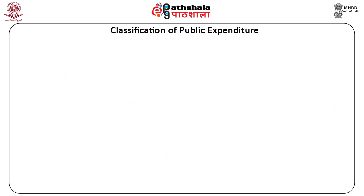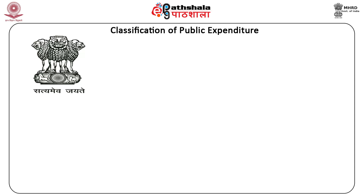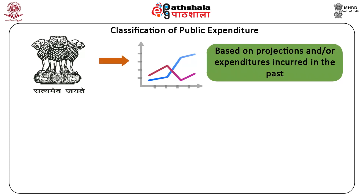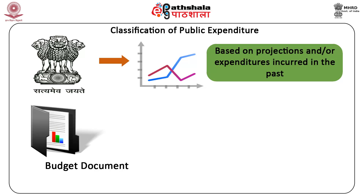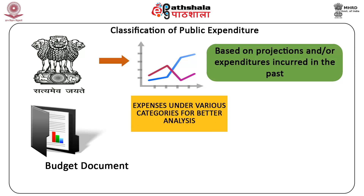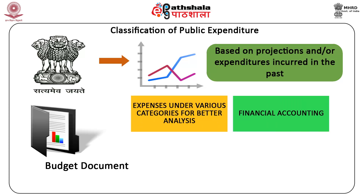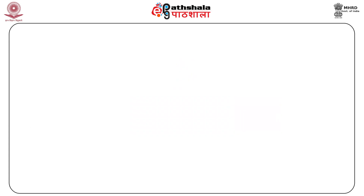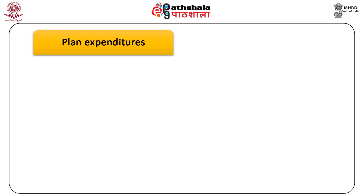Every year, the government prepares estimates of expenditures based on projections and expenditures incurred in the past. This is then presented for parliamentary approval under Article 112 of the Indian Constitution in the form of a budget document. The budget document includes information about expenses under various categories for better analysis, financial accounting and management purposes. The central government had adopted a new classification of public expenditures from the 1987-88 budget, under which all public expenditures are classified into plan expenditures and non-plan expenditures.